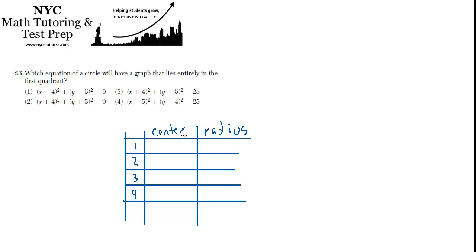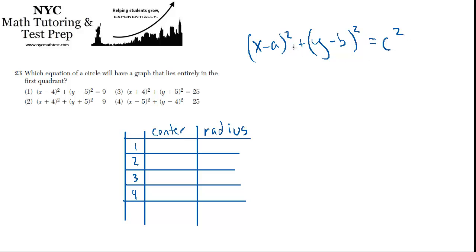In the equation for a circle, we have (x − a)² + (y − b)² = c². The radius is the square root of whatever is on the right side. So if c² equals 9, then c must equal 3.